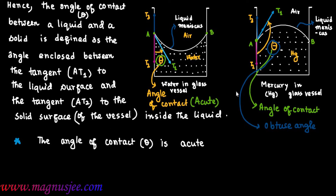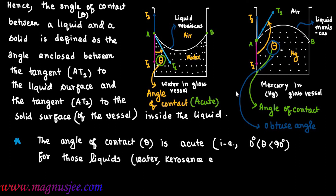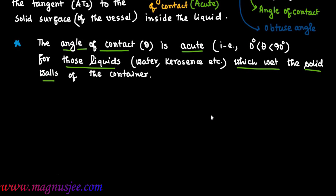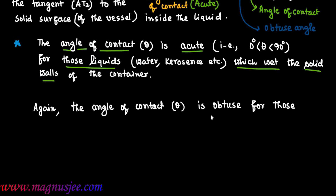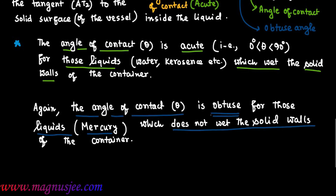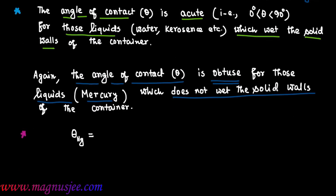Angle of contact theta is acute — that is, theta is between 0° and 90° — for those liquids such as water, kerosene, etc., which wet the walls of the solid container. For those liquids which do not wet the solid walls of the container, such as mercury, the angle of contact is obtuse — that is, theta is greater than 90°.